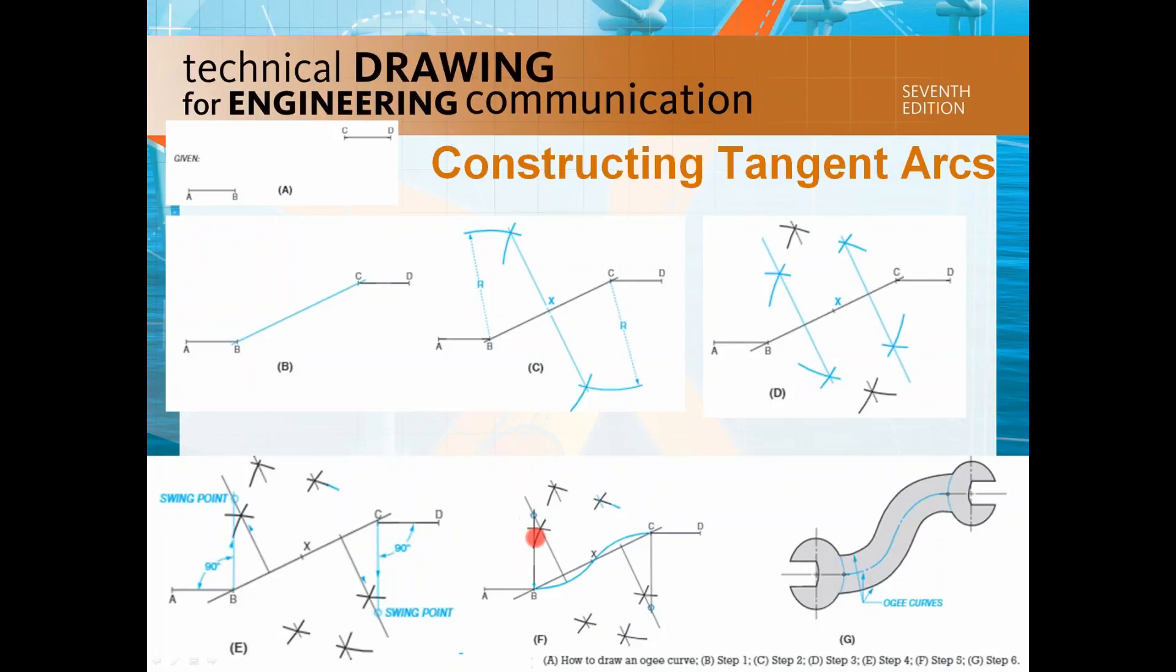With that swing point, draw one little arc here. Do the same thing with that swing point and then make another arc there. This is one of the good examples of how the OG curve looks like.